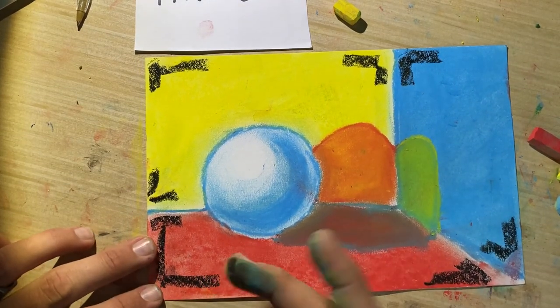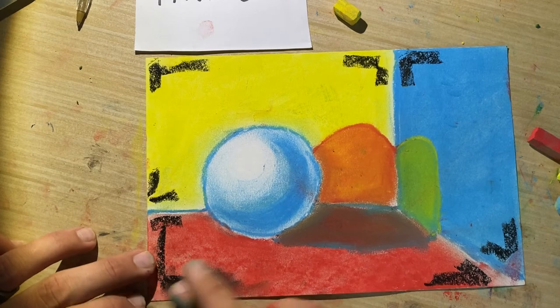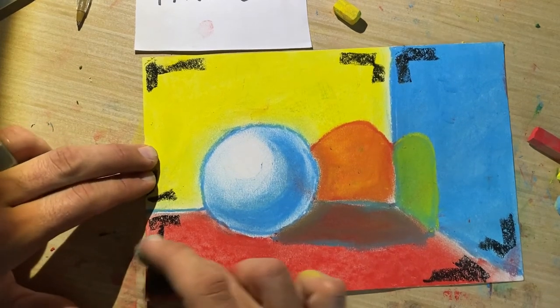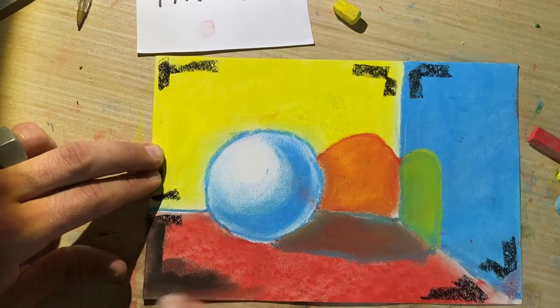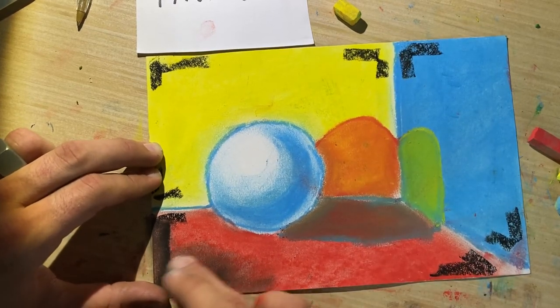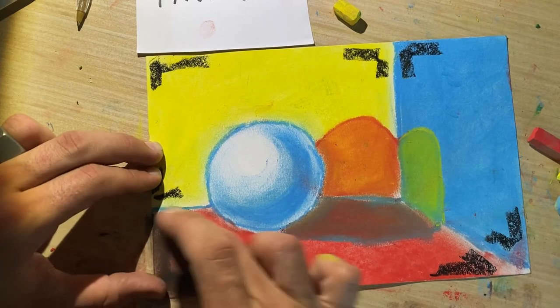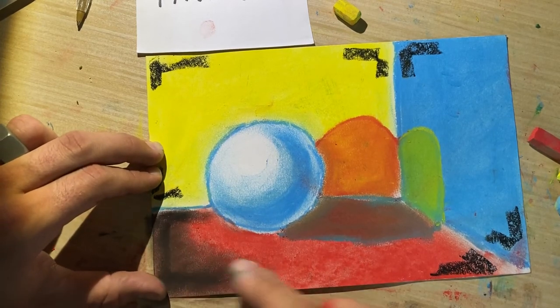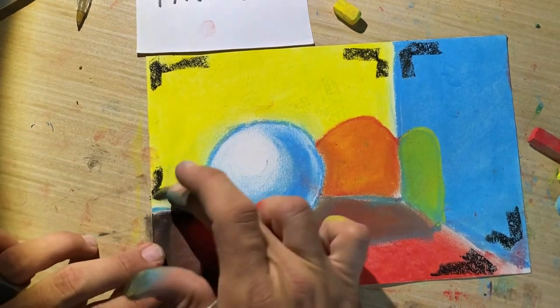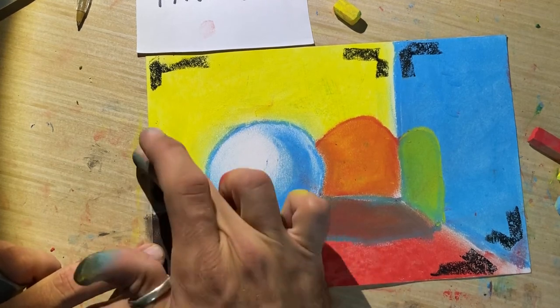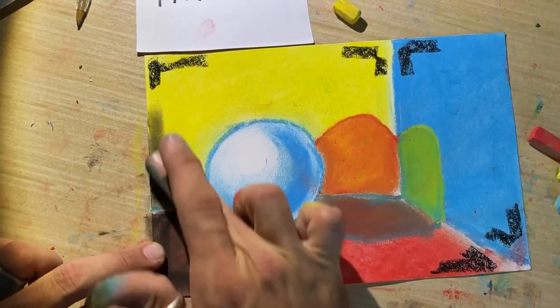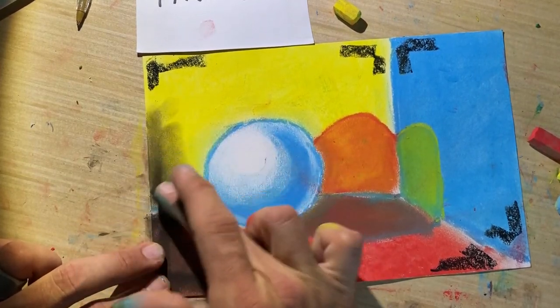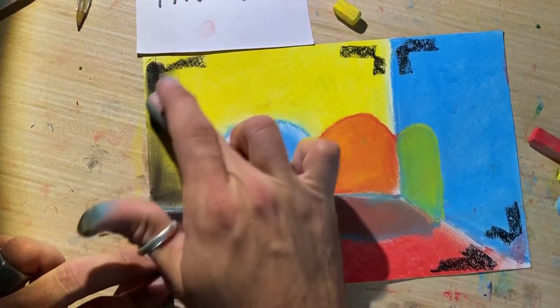So still keep in mind which finger is which. I blend towards the outside first because you want your outside to be darker. And then in a circular motion work to fade that in towards your sphere. You can always add more dark if you need to or more black, but you can't take it away.